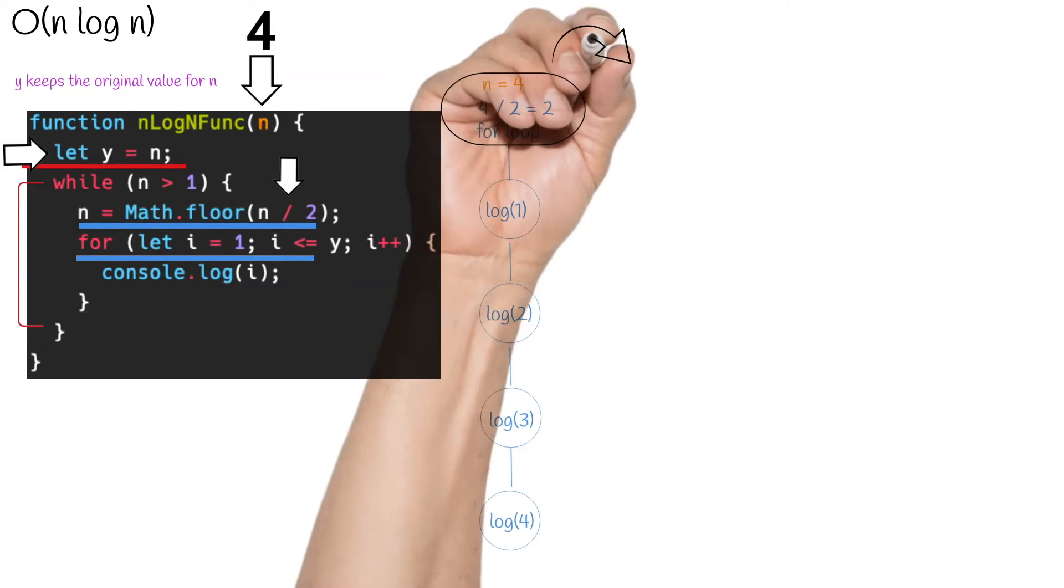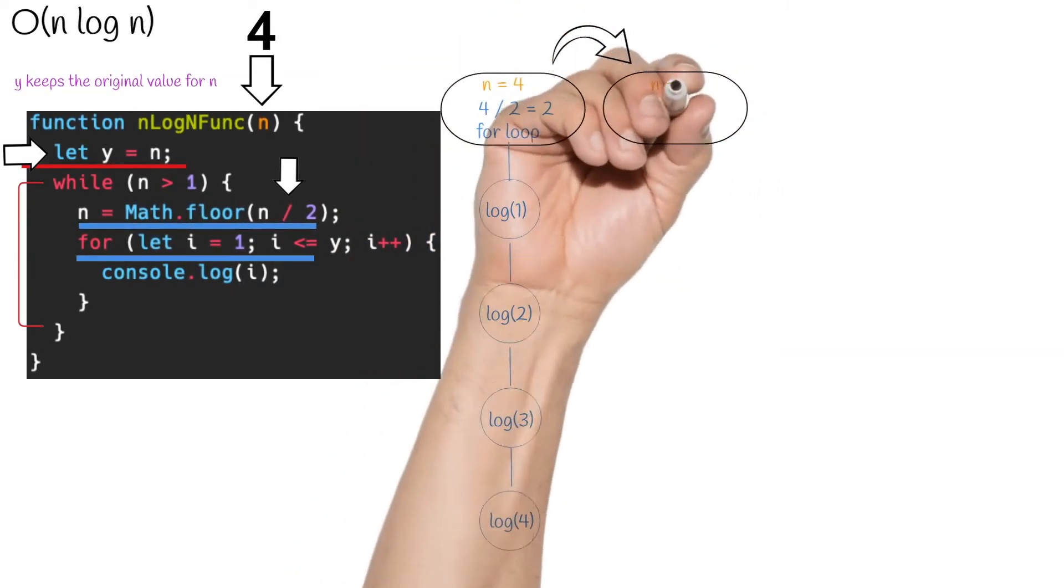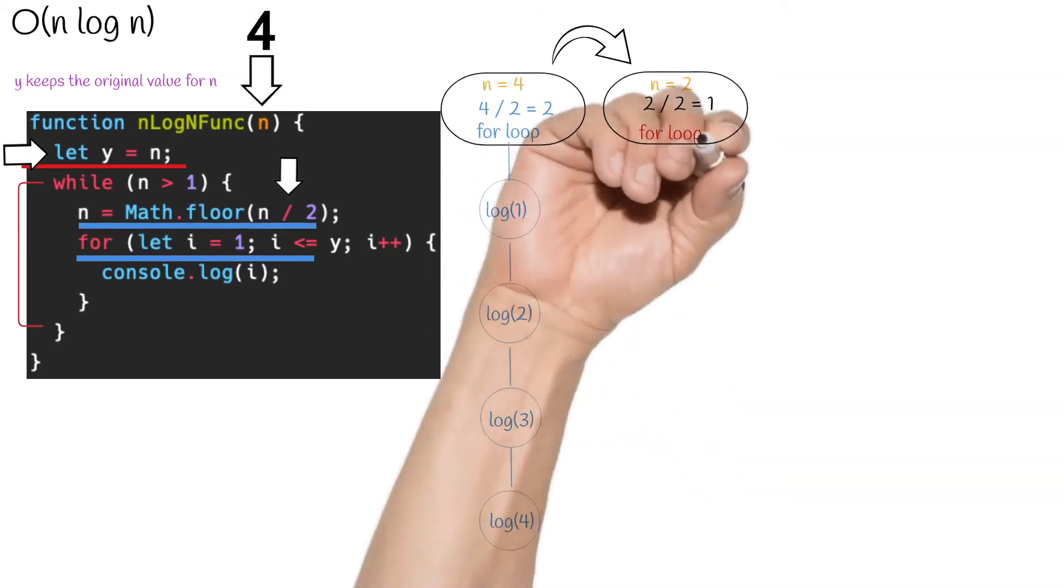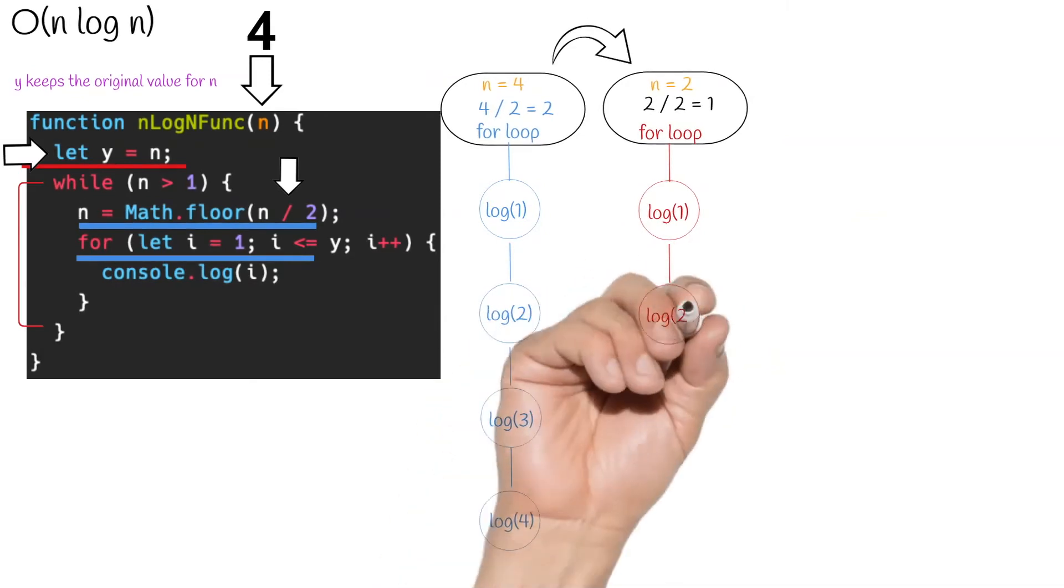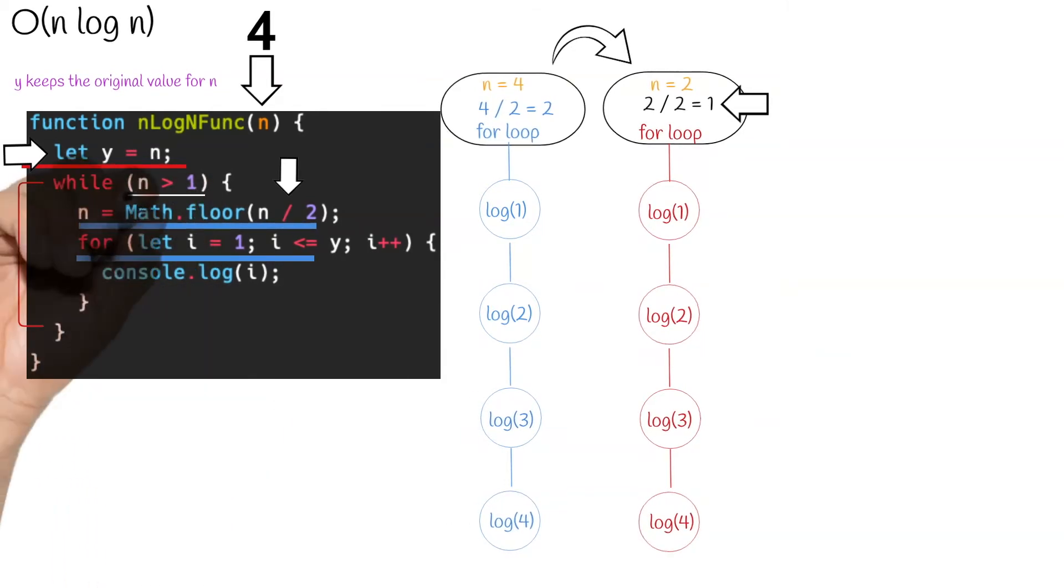Once this is finished, we move on to the next iteration of the while loop and repeat the process. Going into this iteration, n is now two. We start by dividing n by two, so n is now one. And once again, we iterate through our inner for loop up until the size of y. Now at this point, you will notice that our n is now one. If we check the condition of our while loop, we see that we only want to iterate while n is greater than one. So the while loop will now terminate and the function is finished.